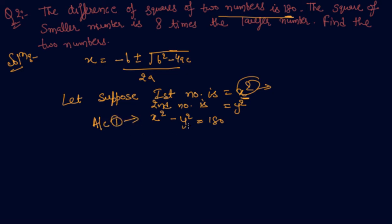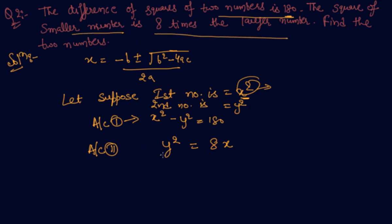The second condition is: the square of the smaller number is 8 times the larger number. I suppose the smaller number is y, so y square equals 8x. Substituting this value of y square into the first equation gives us the quadratic equation x square minus 8x minus 180 equals 0.